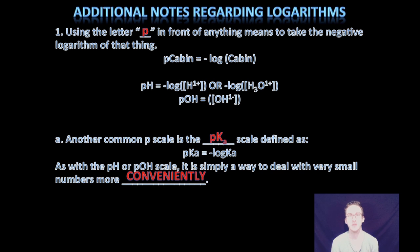Now here's some also really exciting things when it comes to understanding logarithms and how they apply to chemistry. You can put the letter P in front of anything. And it means the negative common logarithm of that. So negative log base 10 of that thing. So if I wanted to know P cabin, essentially I need to take the negative log of cabin.